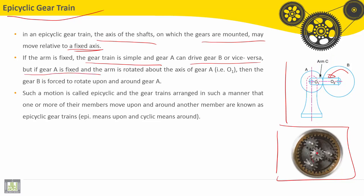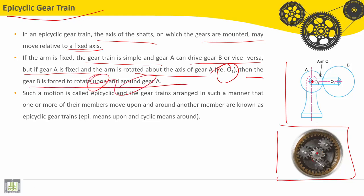But if gear A is fixed and the arm is rotated about the axis of gear A, around point A or around this axis, then gear B is forced to rotate upon and around gear A. If gear A is fixed, gear B will rotate upon and around gear A.